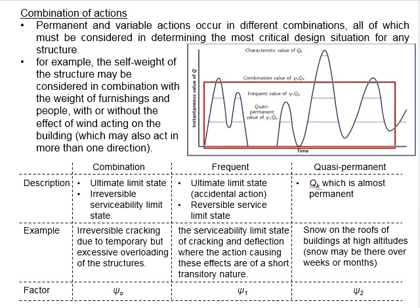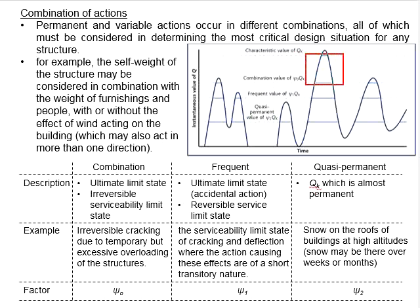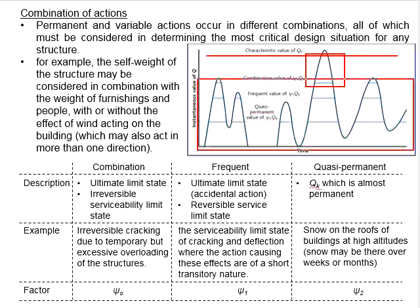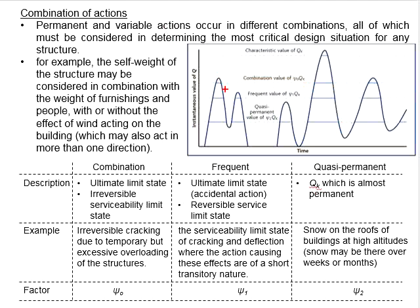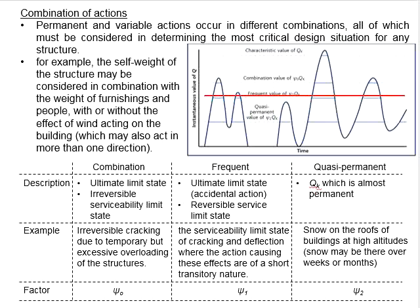Assuming the area below the curve represents probability, the chance of all variable actions simultaneously reaching their characteristic value is quite low. For a more economical design, you may use the combination value ψ₀Qk for all accompanying variables while using the characteristic value Qk for the leading variable. The frequent value is for accidental applications, and the quasi-permanent value is for variable actions that are nearly always present.